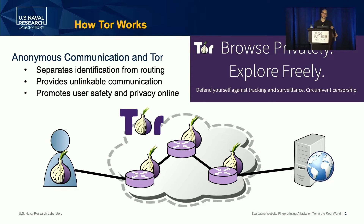Tor is an anonymous communication system that provides anonymity to its users. To achieve anonymity, users build circuits through the Tor network that start with an entry relay and end with an exit relay. Once the circuit is built, the client instructs the exit relay to connect to internet destinations.